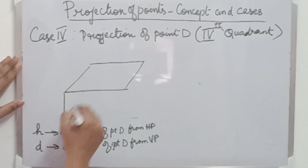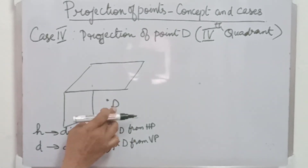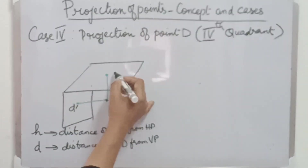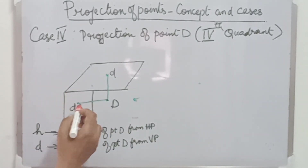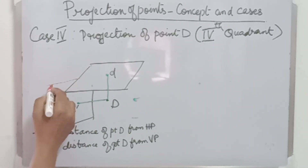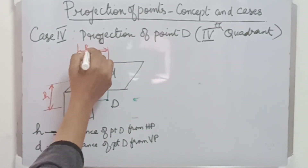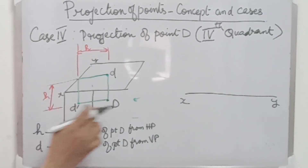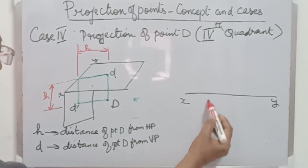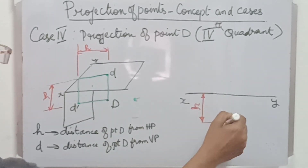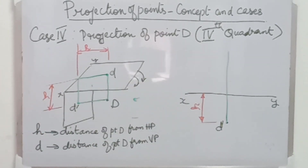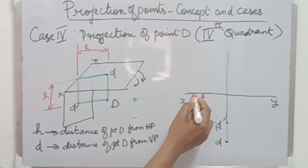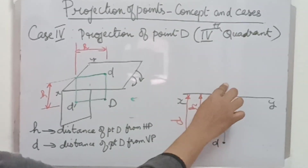Moving on to case 4, where the point is in the fourth quadrant. I am drawing the pictorial view of the fourth quadrant and marking point D. Let us draw the front view D dash and mark the top view as small letter D. Point D is at a distance H from HP and at a distance D from VP. First, mark the front view at a distance H from the XY line, then draw the projector. When we rotate the horizontal plane by 90 degrees, point D — the top view — will be below the XY line itself, and the distance from the XY line is D.